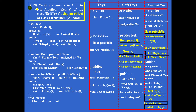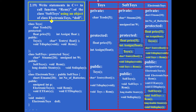Question 2.19: Write statements in C++ to call function remarks of the class soft toys using an object of class electronic toys, where the object name is doll. The question is: using an object of class electronic toys named doll, how will you call the function remarks of the class soft toys?